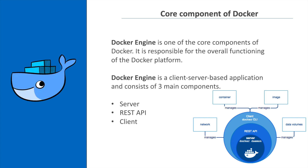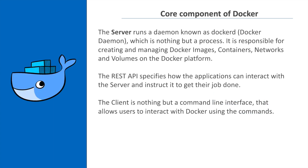Let's understand the core components of Docker. The Docker Engine is one of the core components and is responsible for the overall functioning of the Docker platform. It is a client-server application consisting of three components: the server, REST API, and client. The server runs a process called the Docker daemon, which is responsible for creating and managing Docker images, containers, networks, and volumes. The REST API specifies how applications can interact with the server. The client is a command-line interface that allows users to interact with Docker using commands.